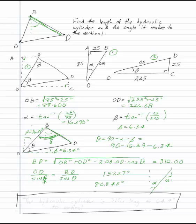And like all of these problems at the end of the day, what you need to do is actually answer the question. The hydraulic cylinder is 310 long to 3 sig figs, so you're going to have 310 at 64.4 degrees to the vertical.